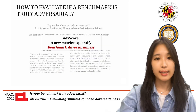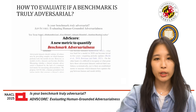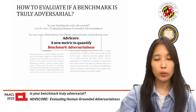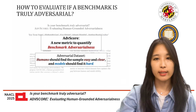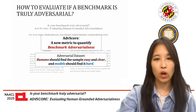That's exactly what this paper is about. It introduces ADB score, a new metric to quantify how adversarial a dataset is, grounded in one simple idea: humans should find the sample easy and clear, and models should find it hard.